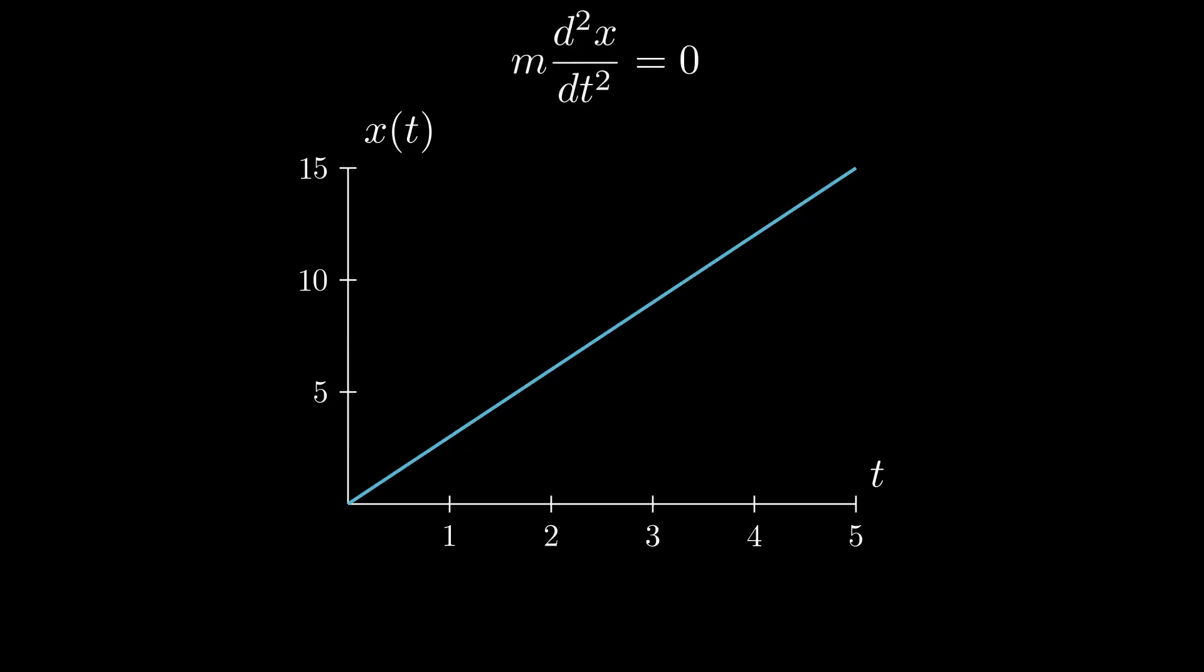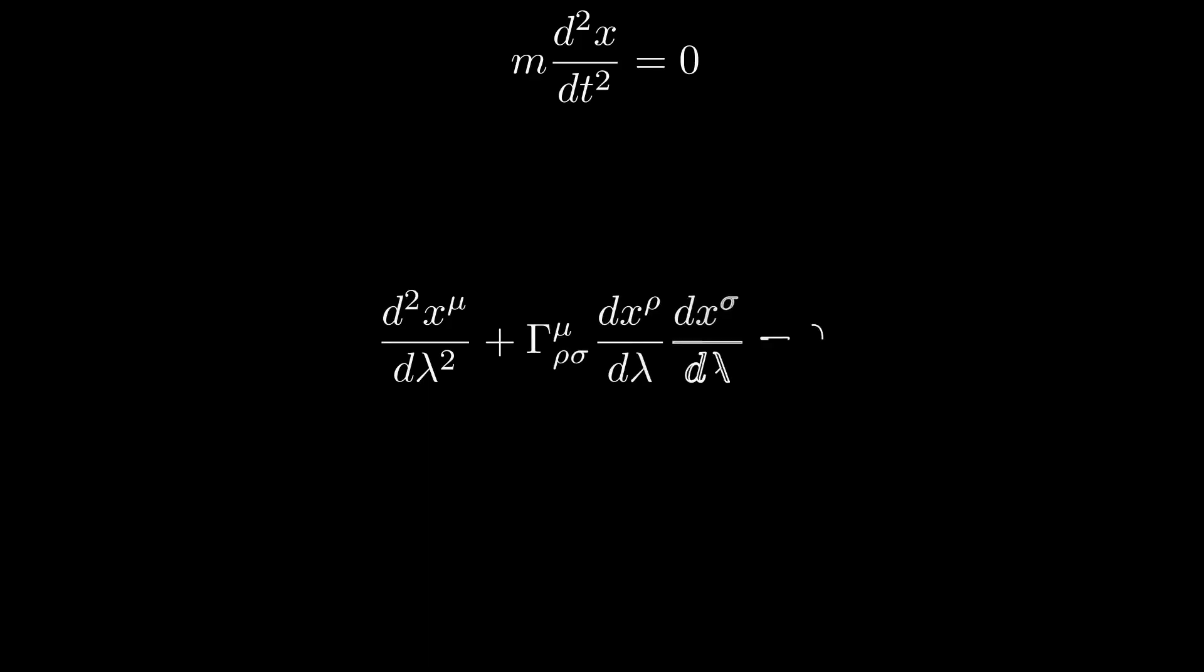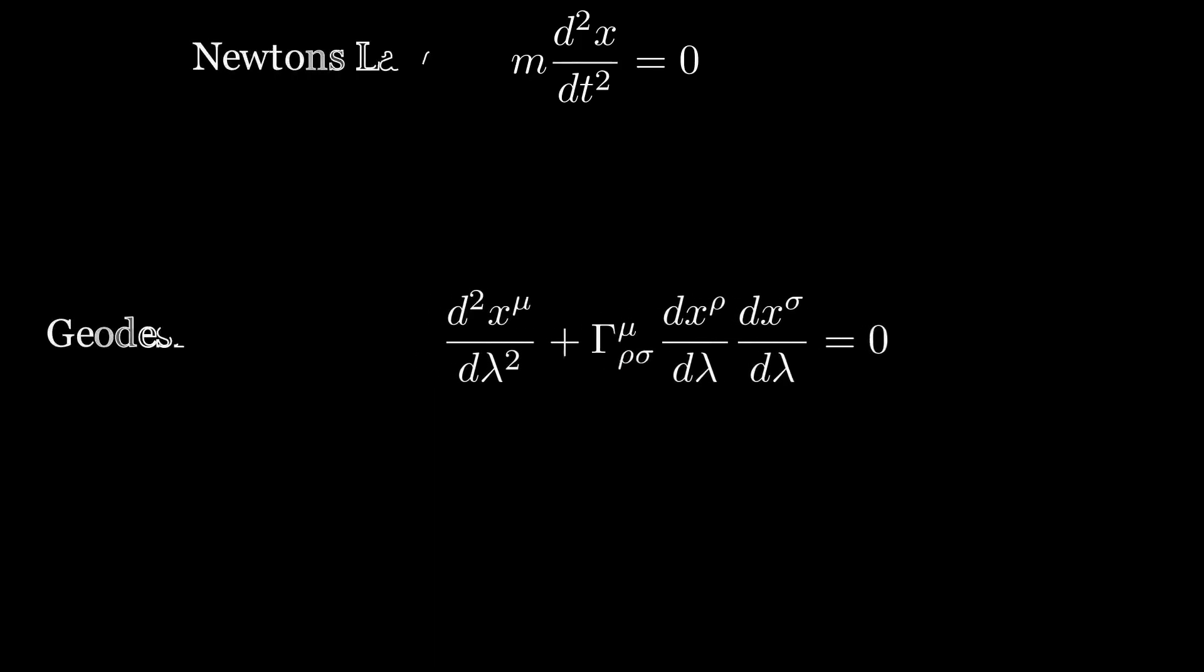Let us rewrite the force equation in terms of differentials and introduce one of the most important equations in general relativity, the geodesic equation. I will argue that this equation can be thought of as the generalization of Newton's Second Law in the case that F equals zero to curved spacetime. We can already see some similarities to Newton's Law, such as this second derivative term.